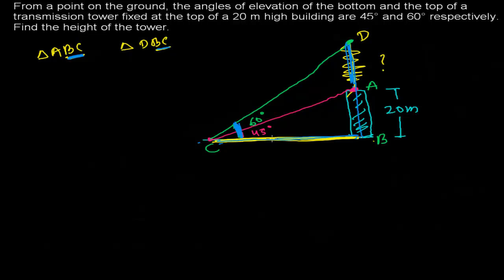So we first find out BC using the smaller triangle ABC, because in that smaller triangle two things are given: AB (20 meters) and the angle of elevation (45 degrees). In a right-angle triangle, if you have any two things — two sides or one angle and one side — you can find out everything. So in right-angle triangle ABC we have two things: angle of elevation 45 degrees and the perpendicular AB. What we need to find is BC, which is the base.